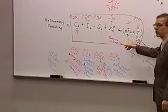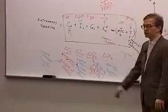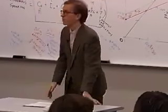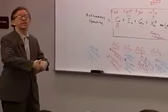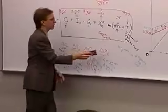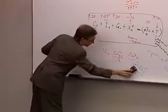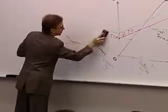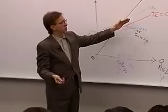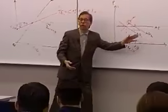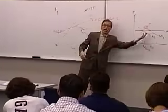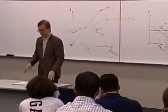Taxes also affect autonomous spending, which we'll cover in the next unit. All of these things we've been discussing can work in reverse: if investment spending falls, total expenditures fall, aggregate demand declines, and GDP goes down. Everything can be reversed.